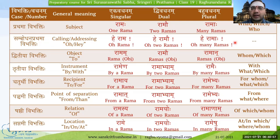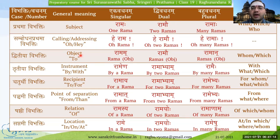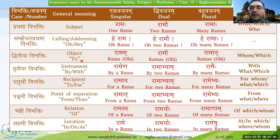There is no Sambodhana Prathama Vibhakti in Kim Shabda, so there is no meaning with respect to that. For Dvitiya Vibhakti it is the object of the sentence — 'whom.' For example, Ramaha Ravanam hanti — Ramaha Kam hanti — 'whom will Ramaha kill?' The answer will come in Dvitiya Vibhakti: Kam or Kim. For Tritiya Vibhakti, as we learned — Mala Karaha Kena — Kena means 'with what' or 'by what.'